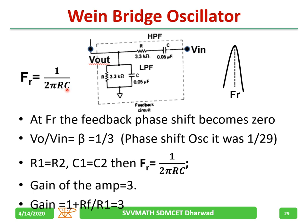The resonant frequency FR is given by 1/(2πRC). At FR, the feedback phase shift becomes 0° and β = 1/3. Compared to the RC phase shift oscillator where β = 1/29 and gain must be 29, here with R1=R2 and C1=C2, the gain needs to be only 3, given by (1 + Rf/R1). Choose Rf/R1 = 2 to achieve a gain of 3.